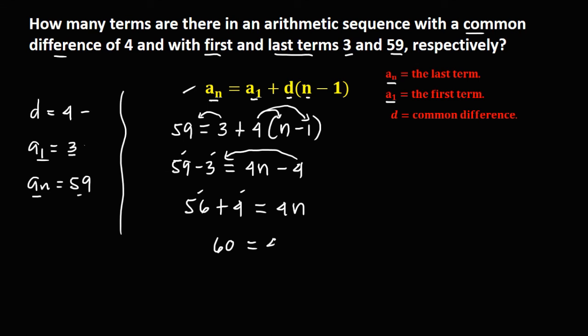Then divide by 4 both sides. So n now is equal to 60 divided by 4, that's 15. Therefore, there are 15 terms on this arithmetic sequence.